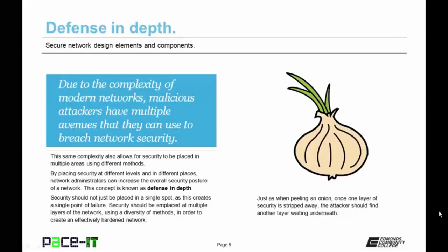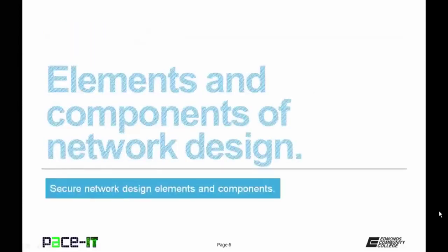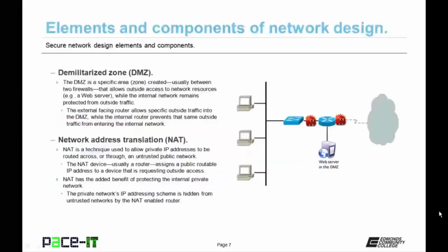Security should be in place at multiple layers of the network using a diversity of methods in order to create an effectively hardened network. Just as when peeling an onion, once a layer of security is stripped away, the attacker should find another layer waiting underneath. By using defense in depth, you should be able to create a highly hardened and secure network. Let's talk about elements and components of network design. First up is the demilitarized zone, or DMZ—a specific area created usually between two firewalls that allows outside access to internal network resources, such as a web server, while the internal network remains protected.